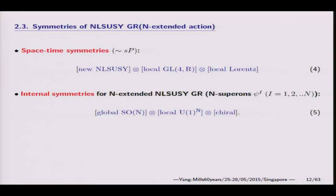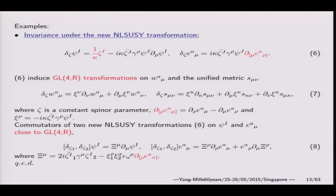Invariance comes from the exact form. This is the space-time invariance. There are also internal symmetries. For example, this is the non-linear SUSY transformation. The vierbein is transformed this way. Under these transformations, unified vierbein is transformed this way. This is exactly the GL(4,R) transformation of vierbein. The commutator is given to also GL(4,R). Therefore, all of them are closed.